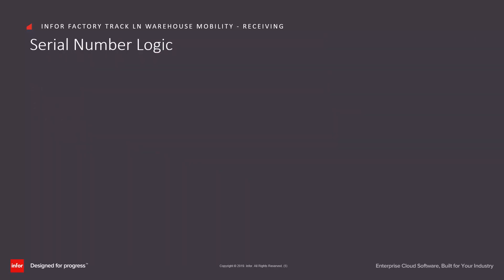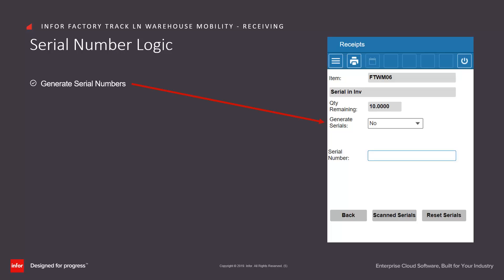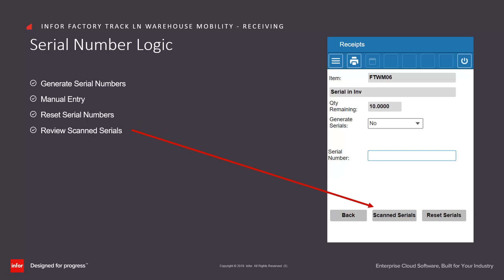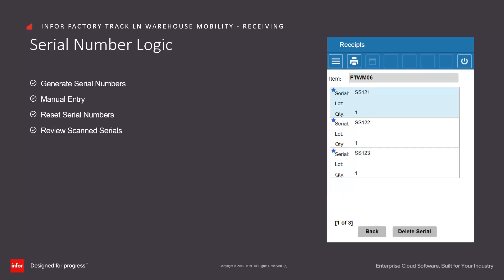Similarly, if serial numbers are being received, the system can either generate the serial numbers for you, or they can be manually scanned in. If they are manually scanned in, it is possible to reset the serial numbers if a mistake has been made, or to view the ones that have already been scanned in. In this case, you can then select one of those and remove it if it had been scanned in error.